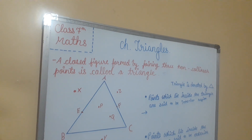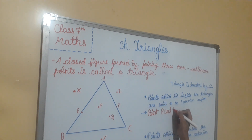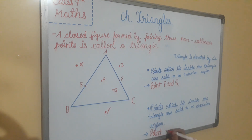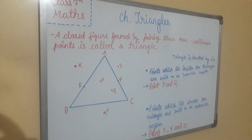Important points of the triangle: points which lie inside the triangle are said to be in the interior region, like point P and point Q are the interior points of the triangle. Points which lie outside the triangle are said to be in the exterior region, like points X, Y and Z. Points lying on the sides of the triangle are said to be on the boundary of the region.